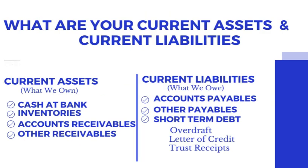Current assets are made up of cash at bank, inventories, accounts receivables, and other receivables. Current liabilities are made up of accounts payables, other payables, and short-term debt or borrowings.